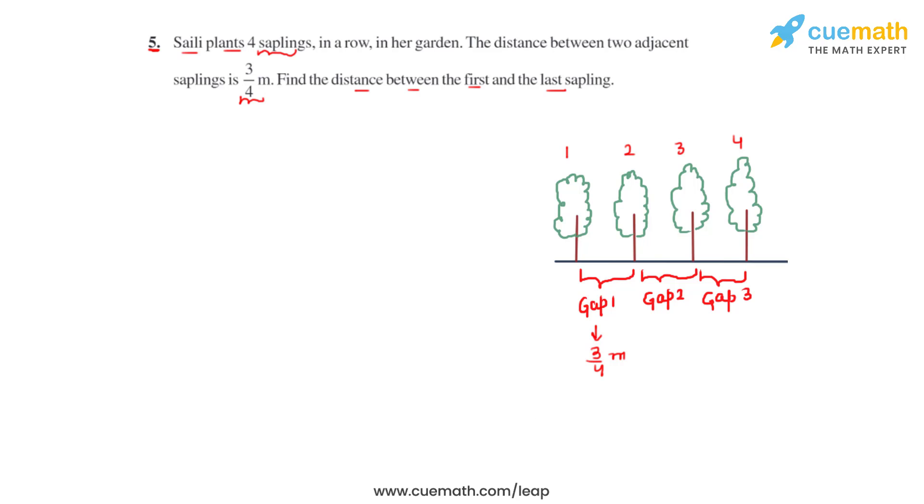So what we can first write is from the figure very clearly that the gap between the first and the last sapling is equal to 3. That is there are basically three gaps between the first and the last sapling. And the length of one gap equals 3 over 4 meters.